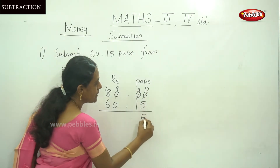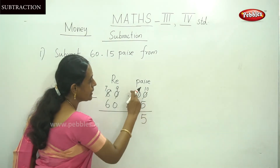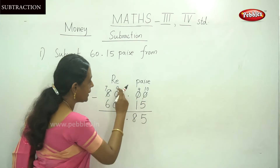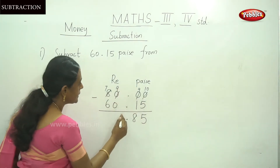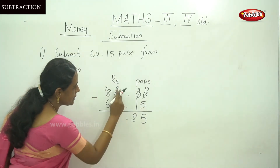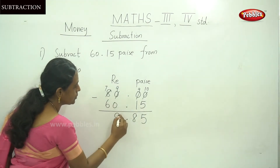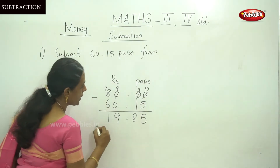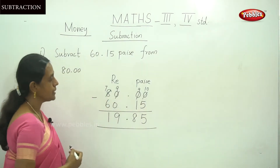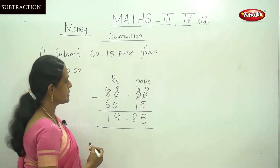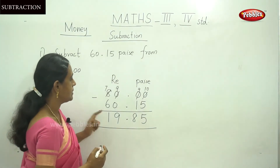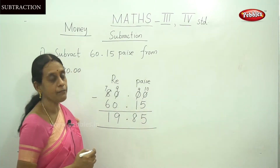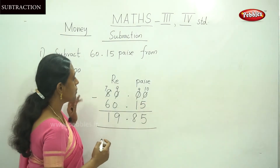10 minus 5 is 5. 9 minus 1 is 8. 9 minus 0 is 9. And 7 minus 6 is 1. So the answer is 19 Rupees 85 Paise.